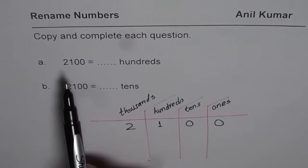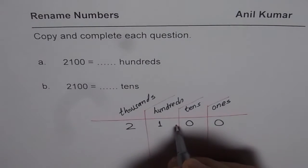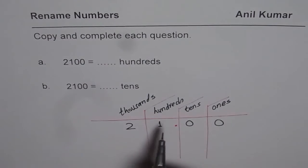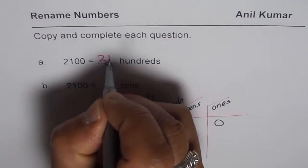If I have to write 2100 in hundreds, what should we do? We should place a decimal after hundreds. We will get 21.00. So it is 21.